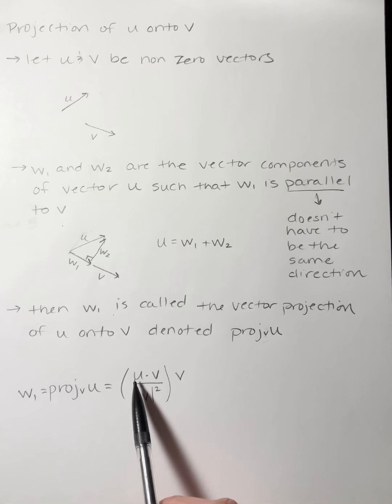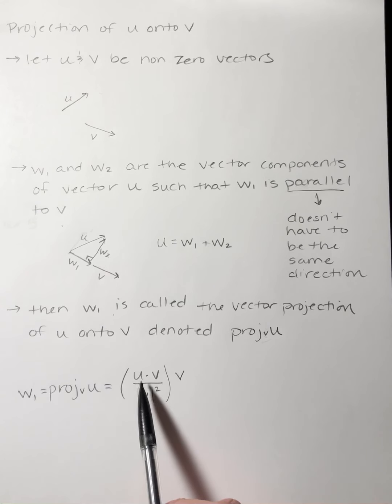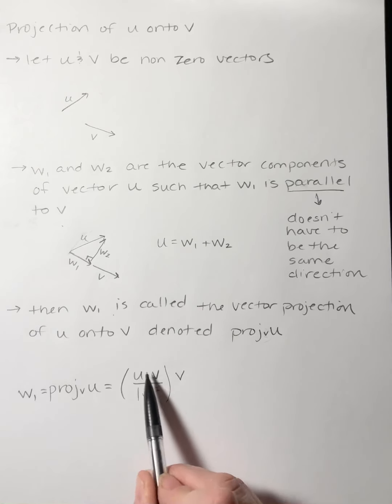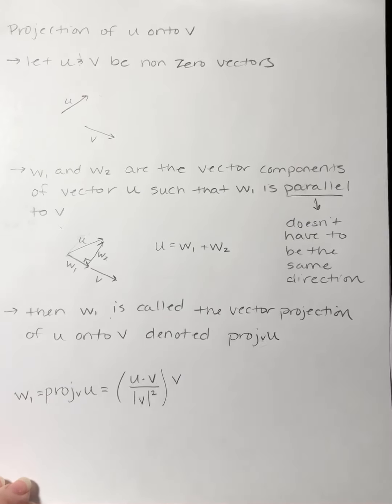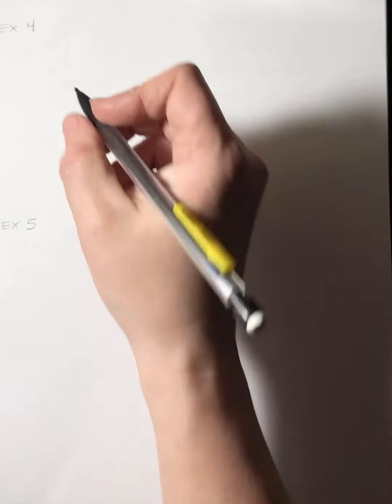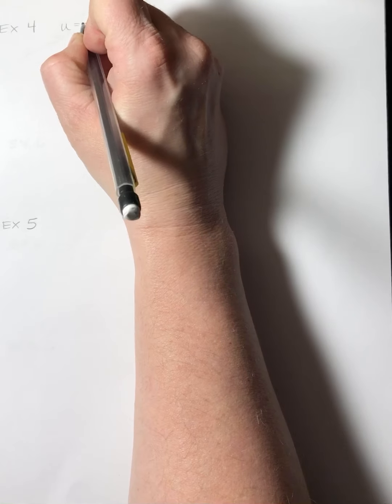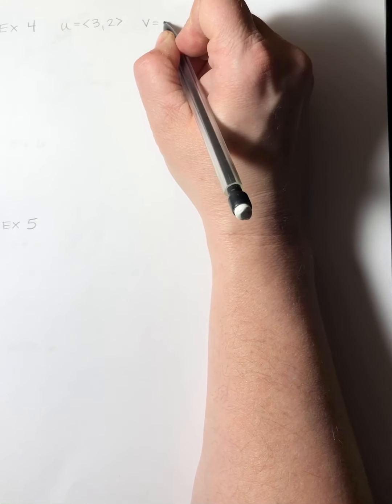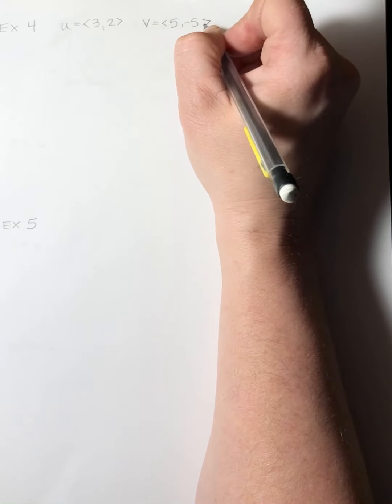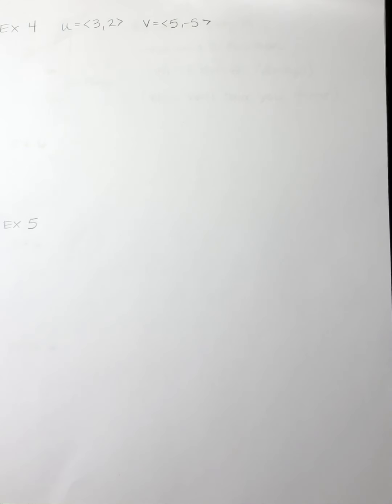To find the projection of u onto v, you take the dot product of u and v, divide by the magnitude of v squared, and multiply that times vector v. Example 4: find the projection of u = (3, 2) onto v = (5, -5), and then write u as the sum of two orthogonal vectors, one of which is the projection of u onto v.